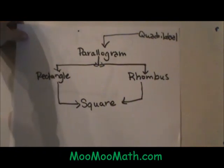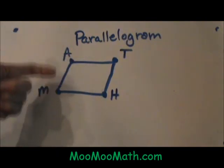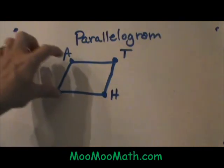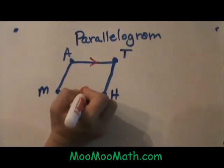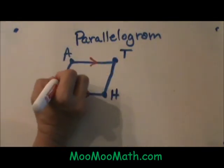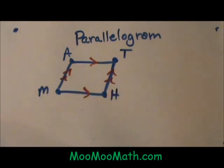Let's look at the properties of just a general parallelogram. A parallelogram has several properties. The definition of a parallelogram is that the opposite sides, so AT and MH would be parallel to each other, and we show that with a symbol of an arrow. MA and HT would also be parallel. That is just the definition of a parallelogram.